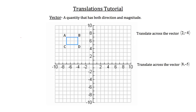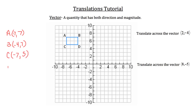So let me show you how we do the manual work on the left-hand side. I'm going to write out the coordinate points of each of the points ABCD. Point A is at (-7, 7). Point B is at (-4, 7). Point C is at (-7, 5). And point D is at (-4, 5).